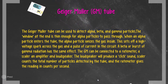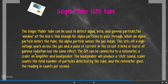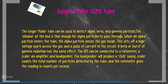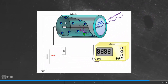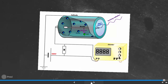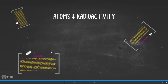The Geiger-Müller tube can be used to detect alpha, beta, and gamma particles. The window at the end is thin enough for alpha particles to pass through. When an alpha particle enters the tube, it ionizes the gas inside and produces a pulse of current in the circuit. The tube has a window, an anode, and the electrons pass through. There is a counter, a resistor, and the power output produces 500 volts. That's your Geiger-Müller tube and that's pretty much all — thank you everyone, thumbs up, bye.